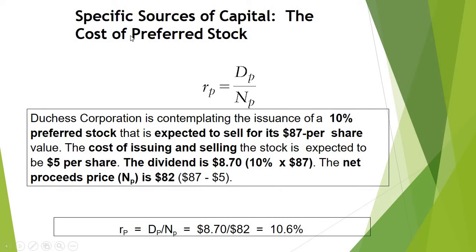Using that formula, by some cross-multiplication, you can find out the cost of the preferred stock. Here, Rp indicates the cost of the preferred stock, Dp indicates the dividend payment of the preferred stock, and NP is the net proceeds from selling of the preferred stock.